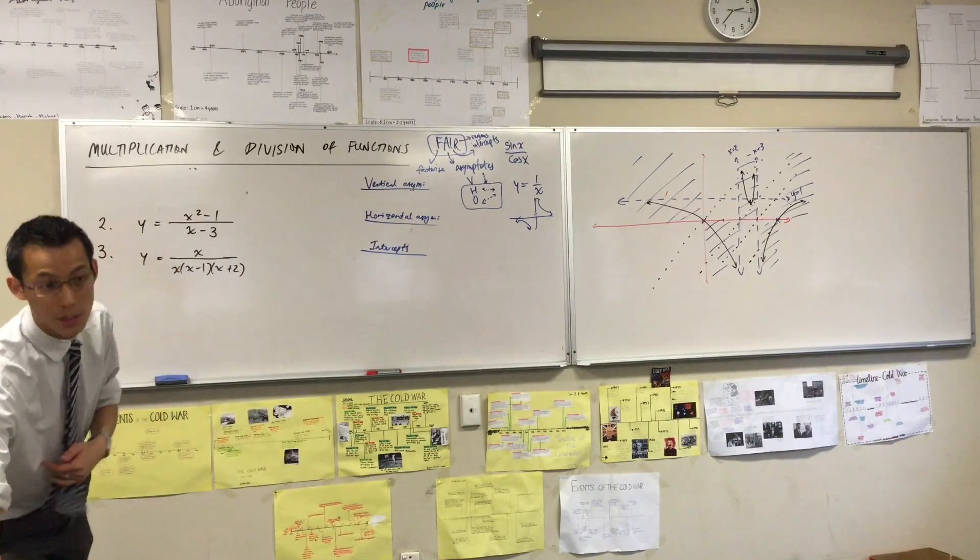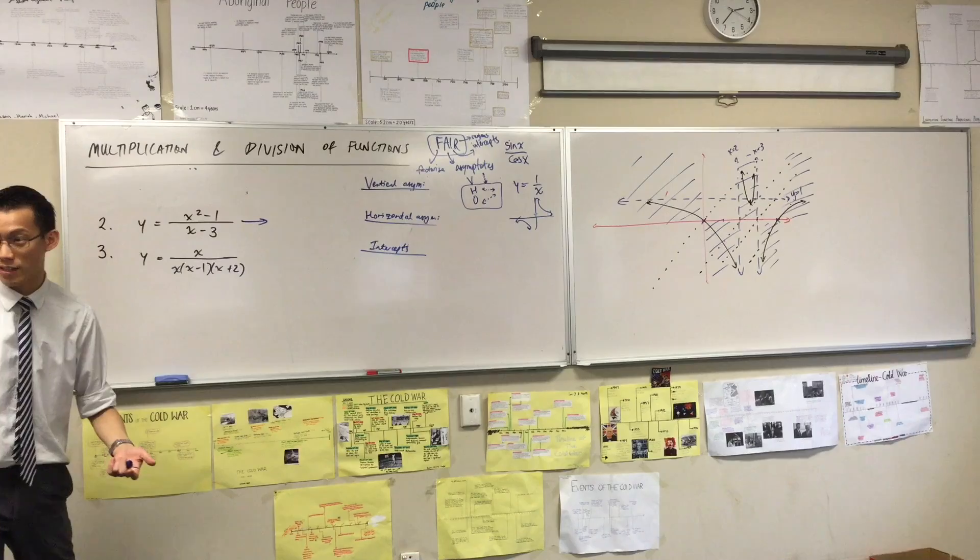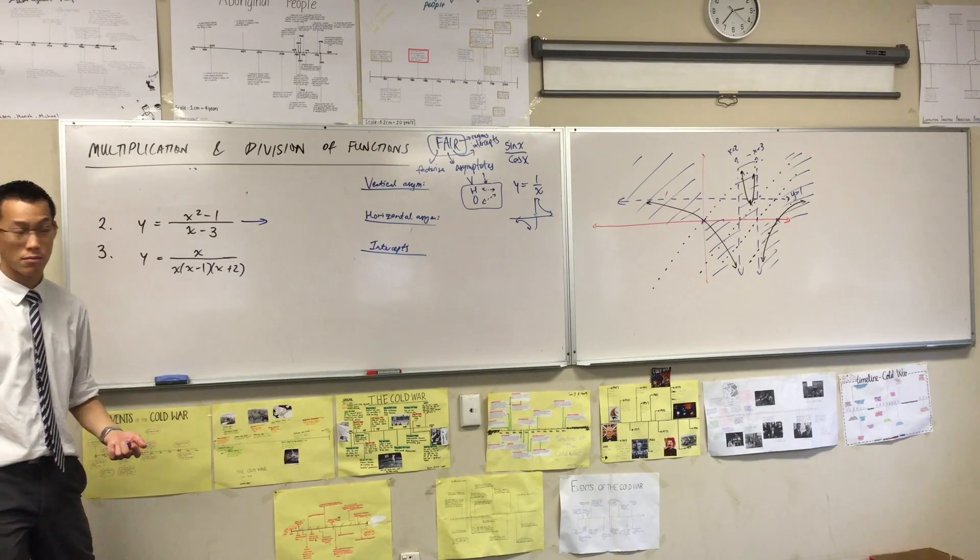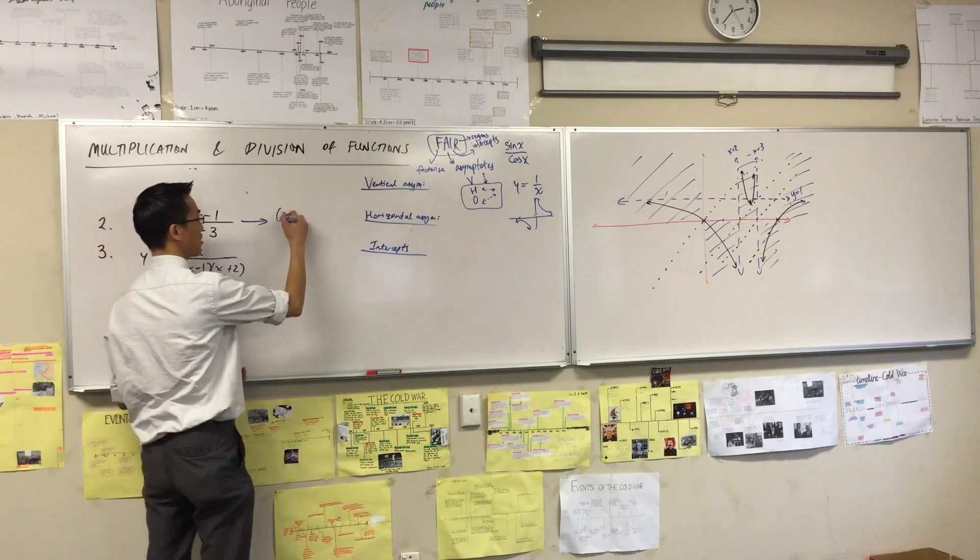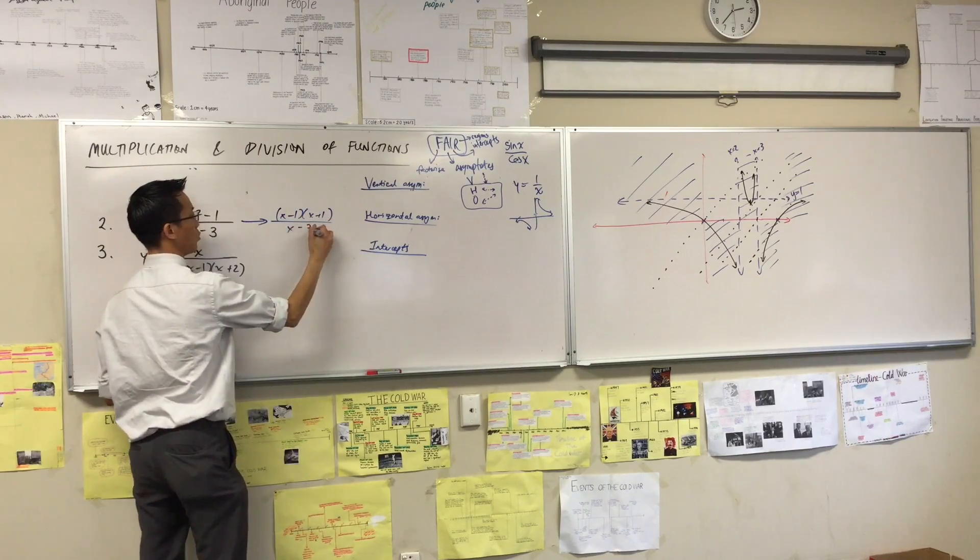This is quite straightforward in terms of it's got less pieces in it than the previous one. There's only one thing you can factorize, which is the numerator. So you factorize it like so. That's good.